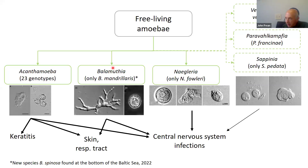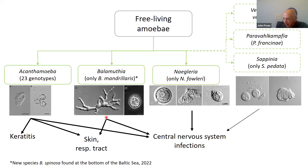Moving on to Balamuthia — there's one pathogenic species, Balamuthia mandrillaris. For a long time that was thought to be the only species, but another has been found in deep water sediments — that's incidental and unrelated to human disease. These organisms also infect the skin and respiratory tract, and again can spread to the central nervous system.